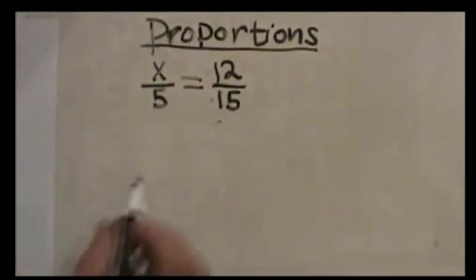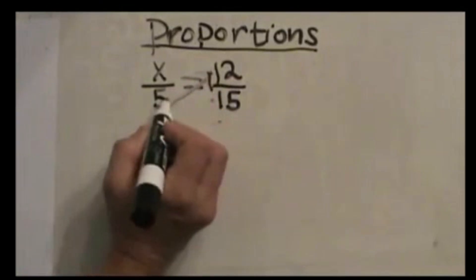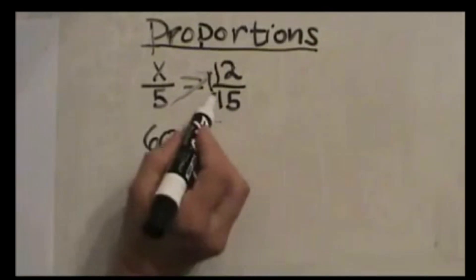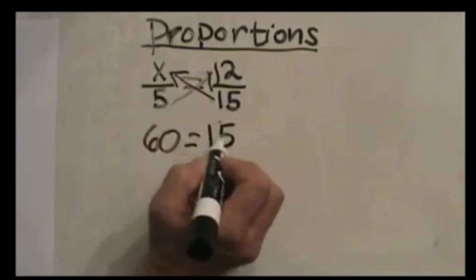Now to start with a cross product, we're going to take 5 times 12. 5 times 12 is 60. Then 15 times x is 15x.